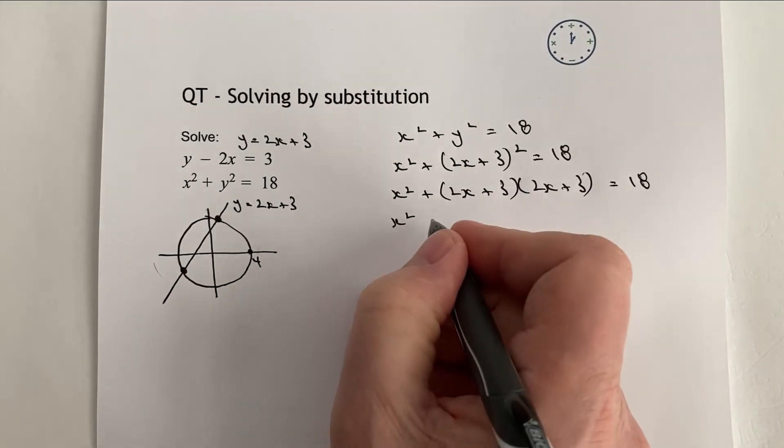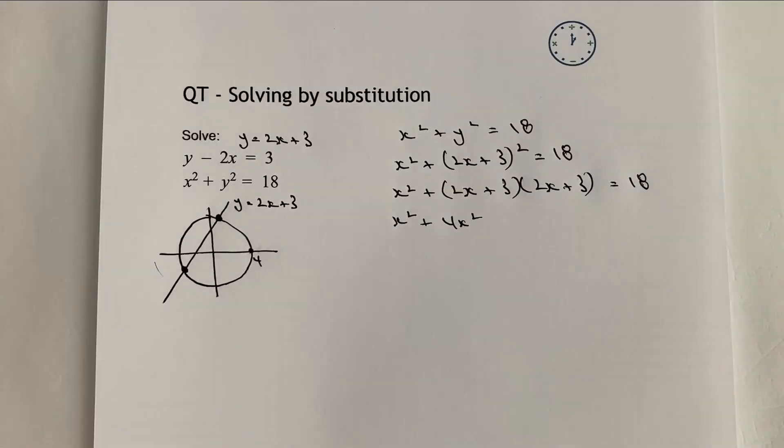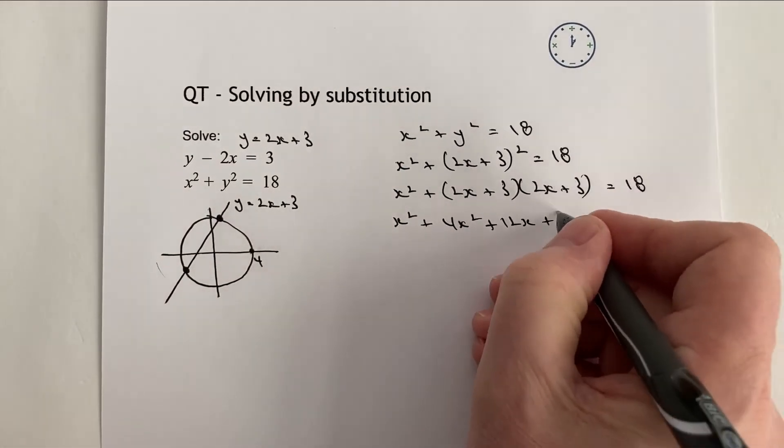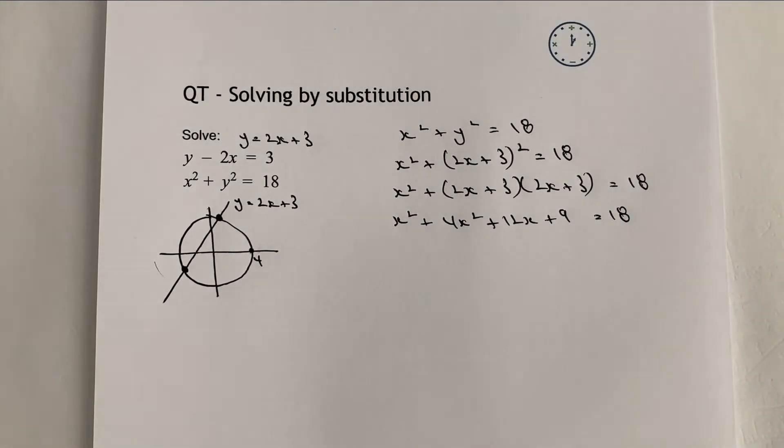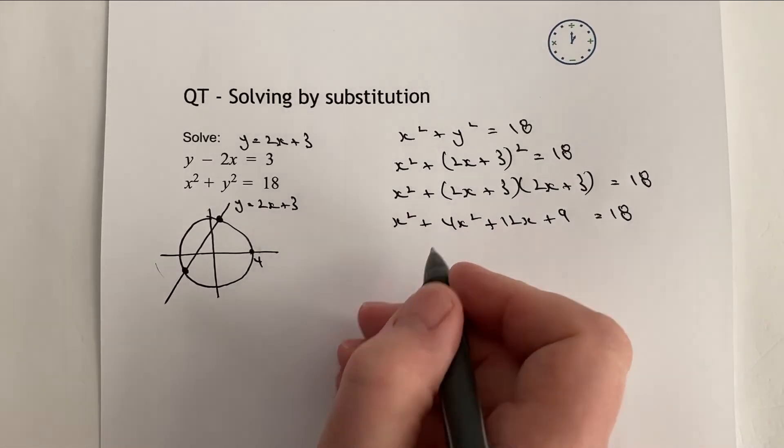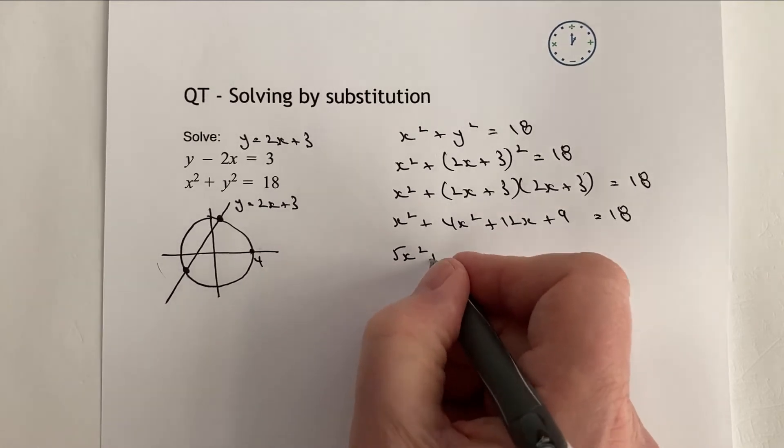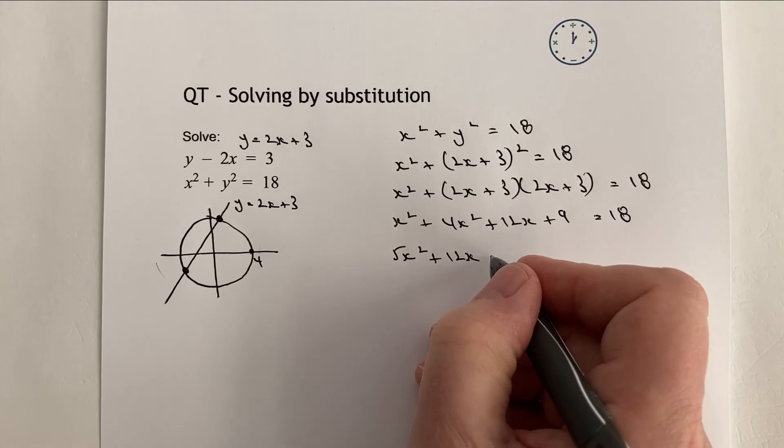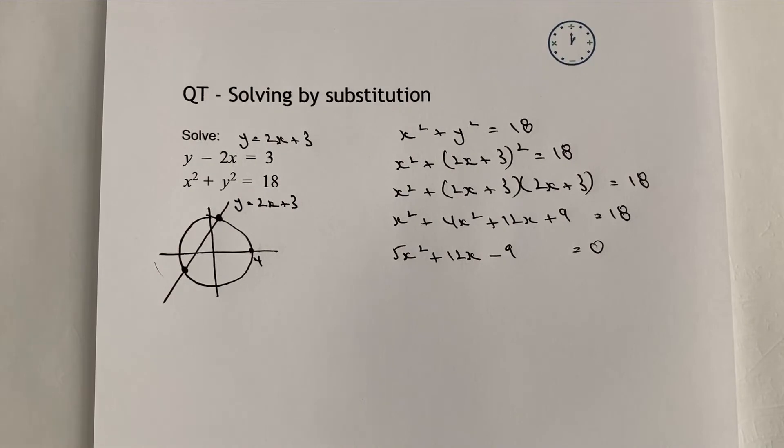So let's expand those brackets. x squared plus 4x squared, and that's going to be 6x plus 6x is going to be plus 12x plus 9 equals 18. Now, in order to factorise or use quadratic formula, we need to get this equal to 0. So what I'm going to do is bring this across together. So that will be 5x squared plus 12x, and I've got plus 9 minus 18 from both sides. That's going to be minus 9 equals 0. And then it really is just a case of factorising that.